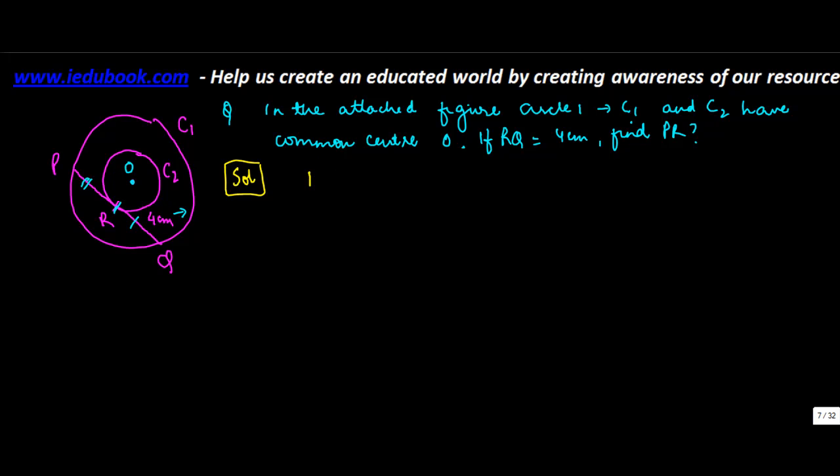We know that PQ touches C2 at R. Hence, PQ is a tangent to circle 2. So PQ basically becomes a tangent. Now what is the property of a tangent? A tangent is perpendicular to the radius.